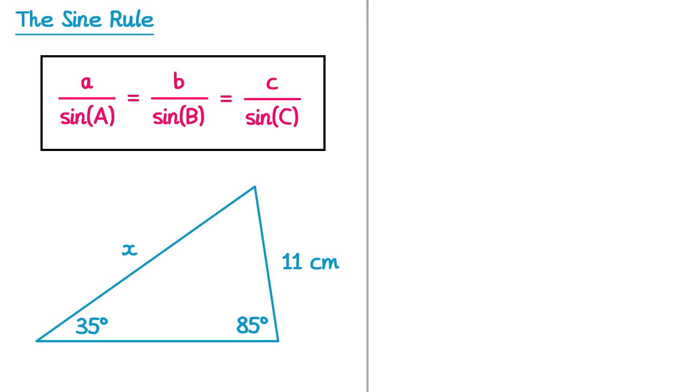To approach this question we're going to add labels to the diagram — lowercase a, capital A, lowercase b and capital B. It's always good to make the side you're finding lowercase a. Since we're finding side X, that's lowercase a. The angle opposite this must be capital A, so the 85° is capital A. The 11cm side is lowercase b and the angle opposite it — 35° — is capital B.